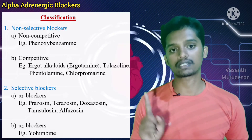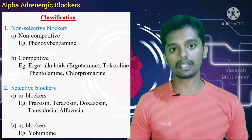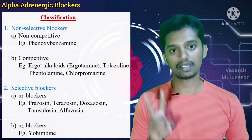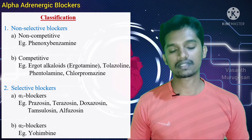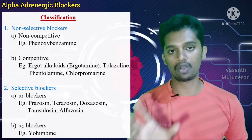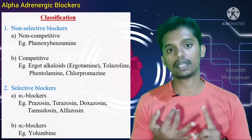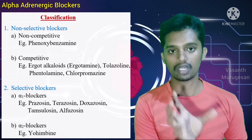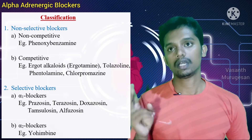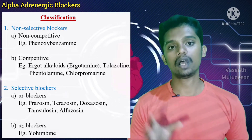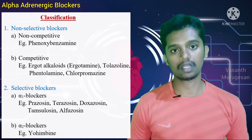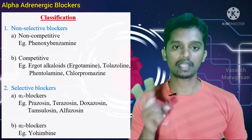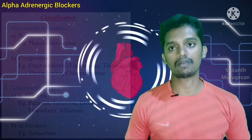The second major category is Selective Alpha Adrenergic Blockers, which block either Alpha 1 or Alpha 2. The first subtype is Selective Alpha 1 Blockers — example drugs are Prazosin, Terazosin, Doxazosin, Tamsulosin, and Alfuzosin. Note the common suffix '-zosin' as a mnemonic for selective Alpha 1 blockers. The second subtype is Selective Alpha 2 Blockers. Overall, there are two major categories with two subtypes each.